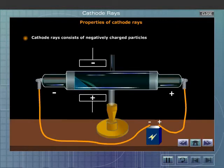Cathode rays consist of negatively charged particles. The rays deflect towards the positive plate when the tube is exposed to an electric field. This is because the negatively charged particles in the cathode rays get attracted towards the positive plate.